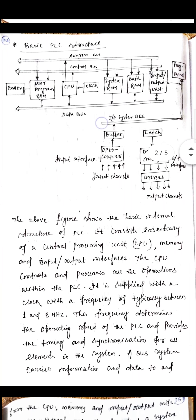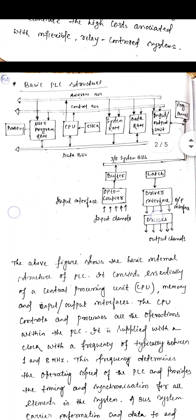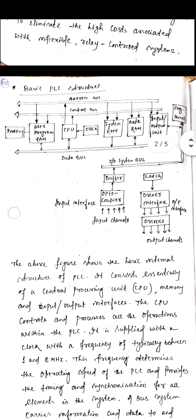Now we will go to the basic internal structure of PLC. Looking at the line diagram here, it represents the basic PLC structure. You can see a CPU — that is central processing unit — a memory, and input and output interfaces. PLCs mainly consist of three parts.